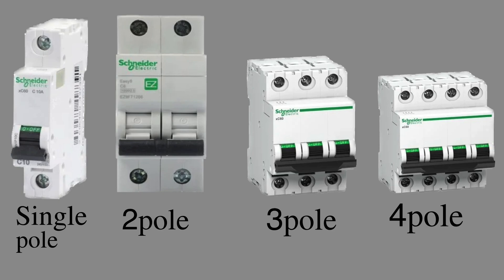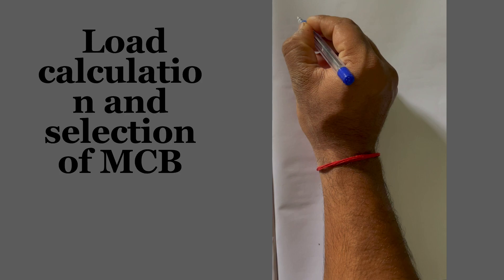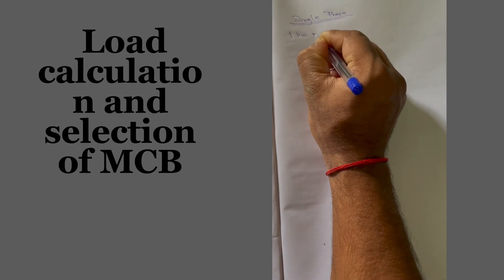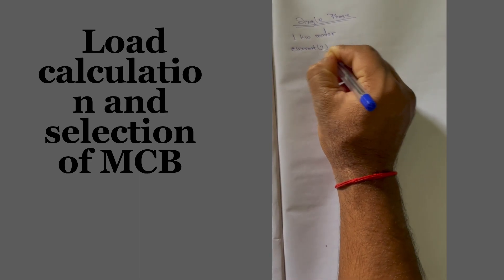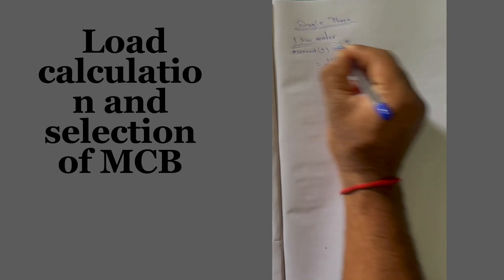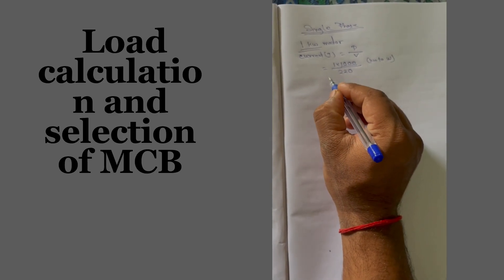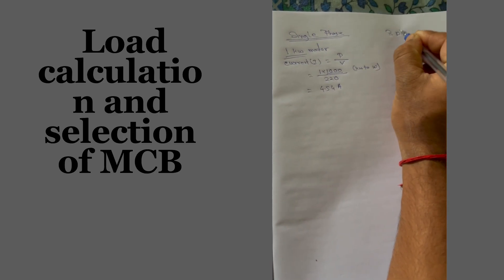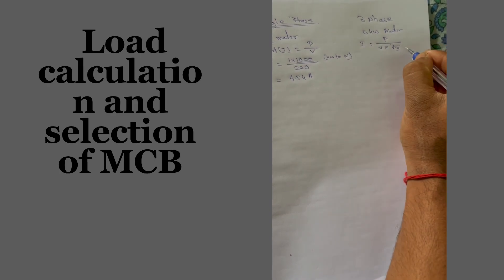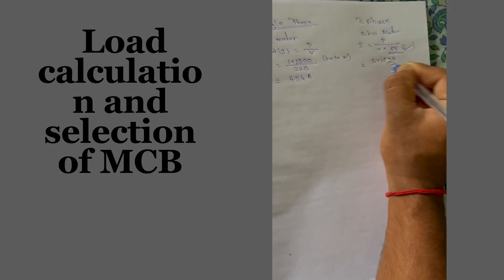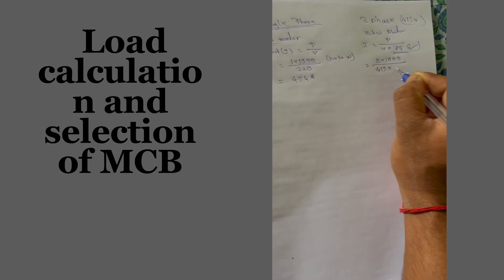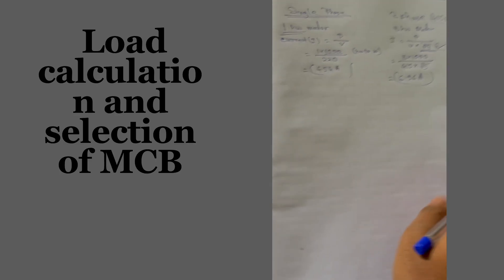Now we will calculate the load current. For a single-phase one kilowatt motor: current = power ÷ voltage = 1000 ÷ 220 = 4.54 amperes. For a three-phase 5.5 kilowatt motor: current = power ÷ (voltage × √3) = 5000 ÷ 450 = 6.96 amperes.